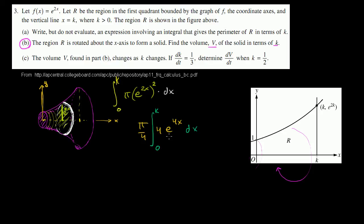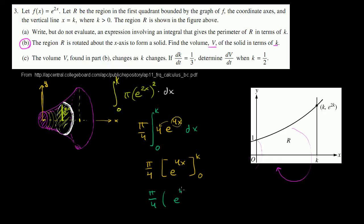The reason we multiplied and divided by 4 is so we have the derivative of 4x sitting right there. The antiderivative of 4e^(4x) is e^(4x), which you can verify: the derivative of e^(4x) is 4 times e^(4x). Evaluating from 0 to k gives π over 4 times e^(4k) minus e^(4·0), which is e^0 equals 1. So the volume is π over 4 times (e^(4k) minus 1).